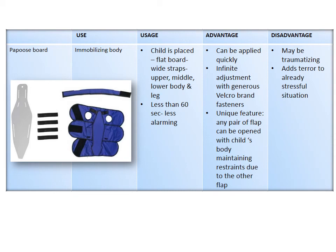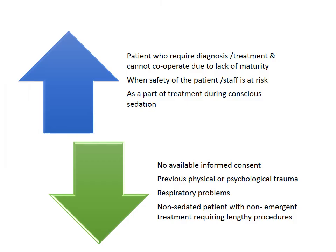The mouth prop or bite block is placed between the back teeth by wiggling it in — not inserted between the front teeth. The wider portion faces the posterior region and the narrower toward the anterior. Advantages: inexpensive, good accessibility and visibility. The papoose board is used for immobilizing the body — the child is placed on a flat board and wrapped with straps around the upper, middle, and lower body. Applying it in less than 60 seconds is less alarming.